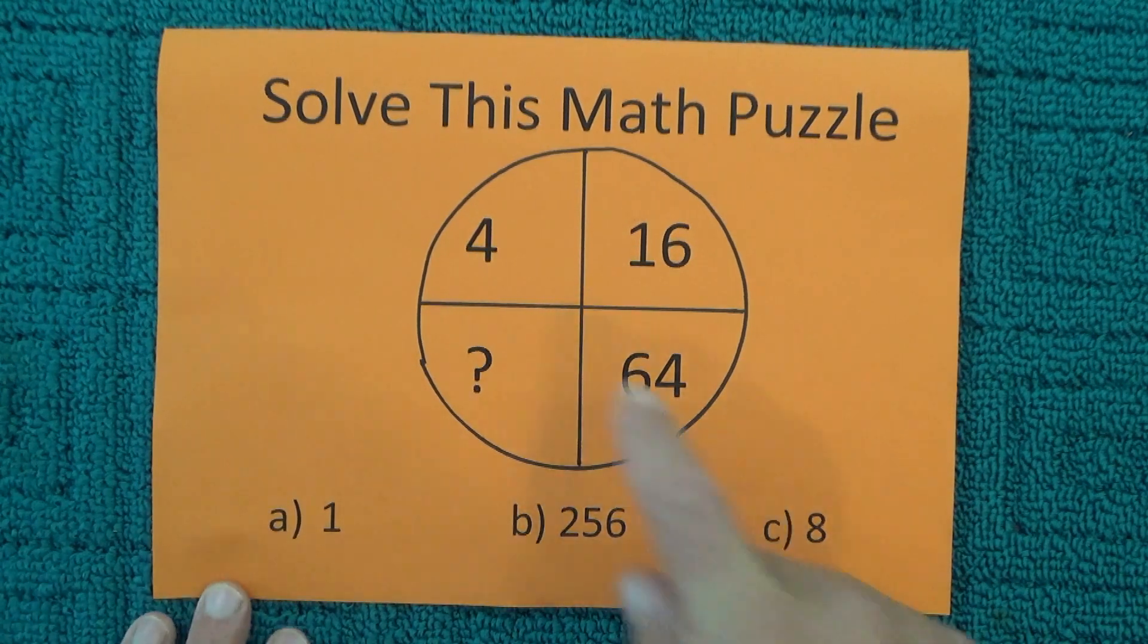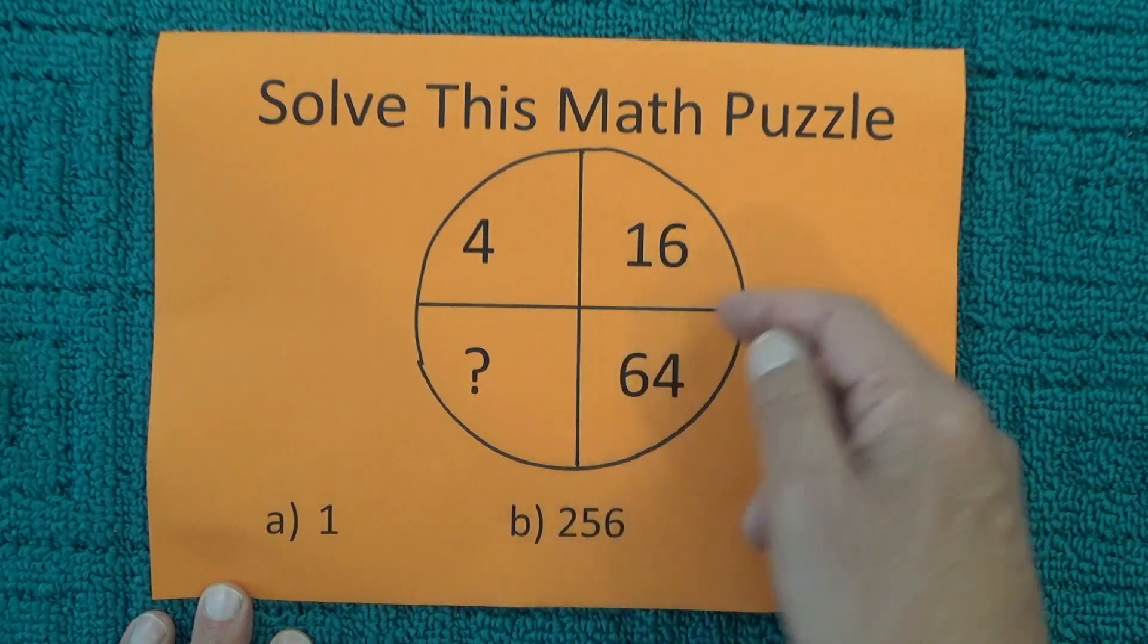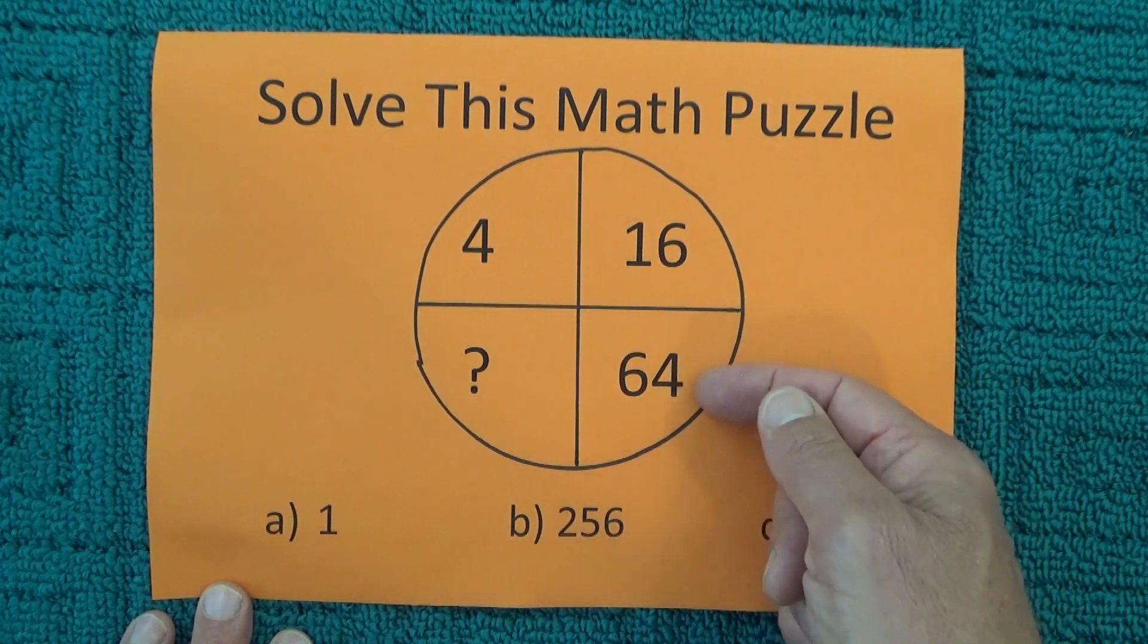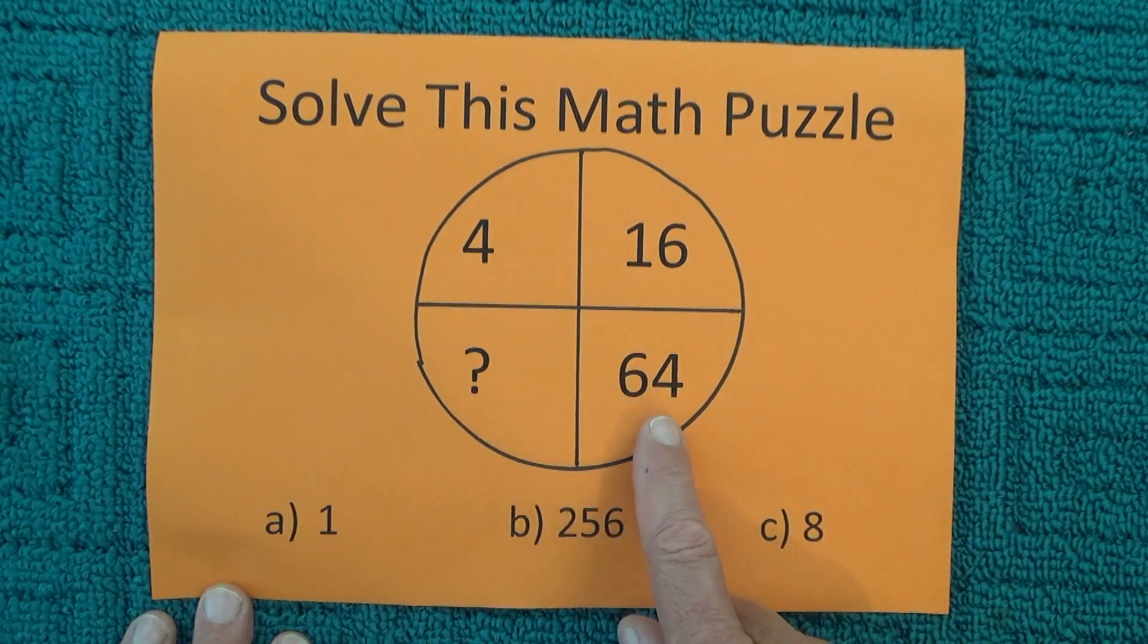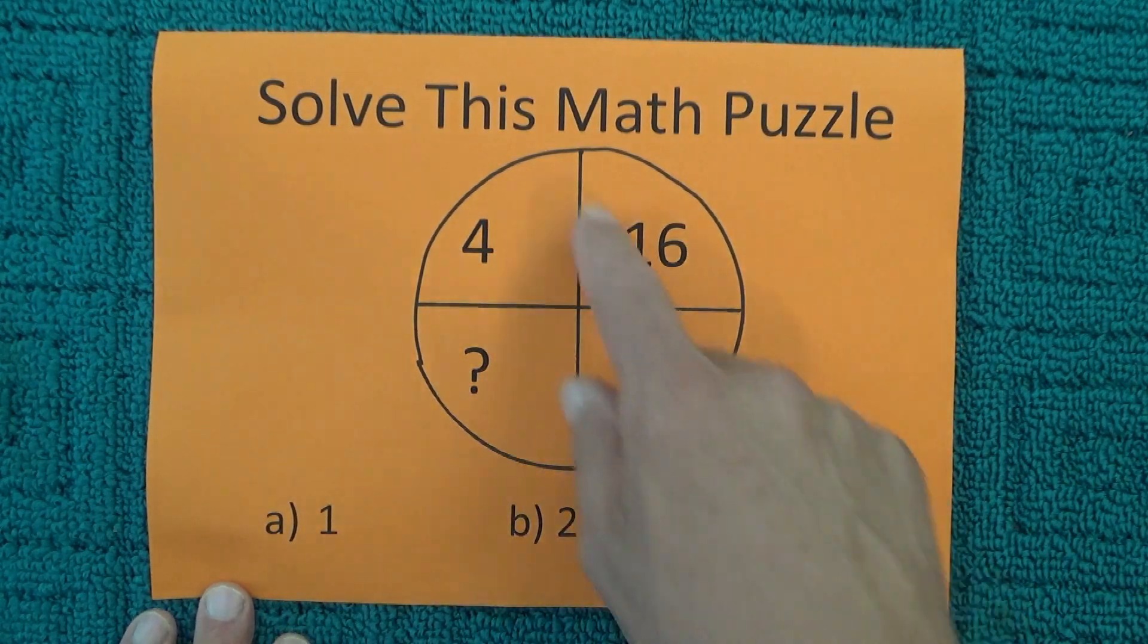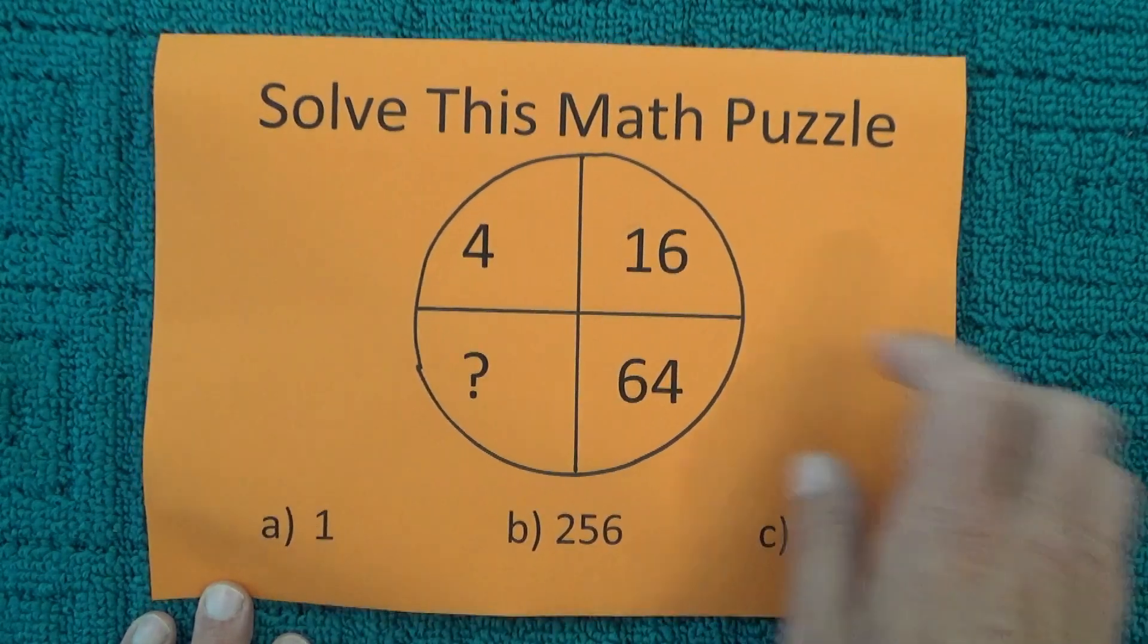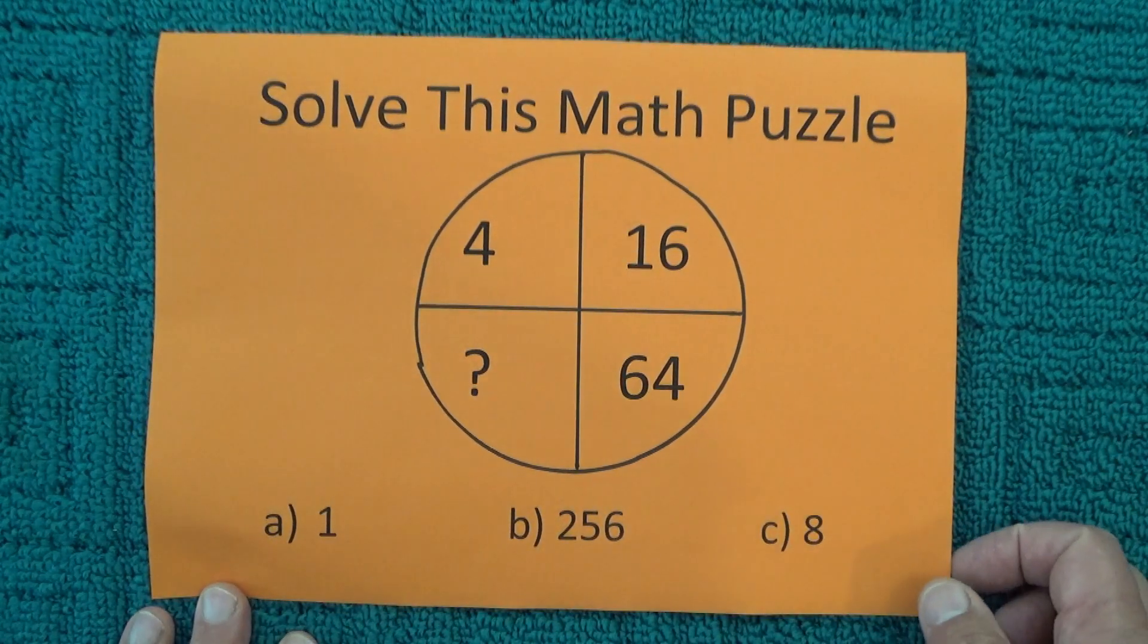The most obvious answer is that you start at the four and you multiply by four to get to 16, you multiply the 16 by four to get to 64, and then you multiply 64 by four to get to 256. That's if you assume you're starting from the top left-hand quadrant.